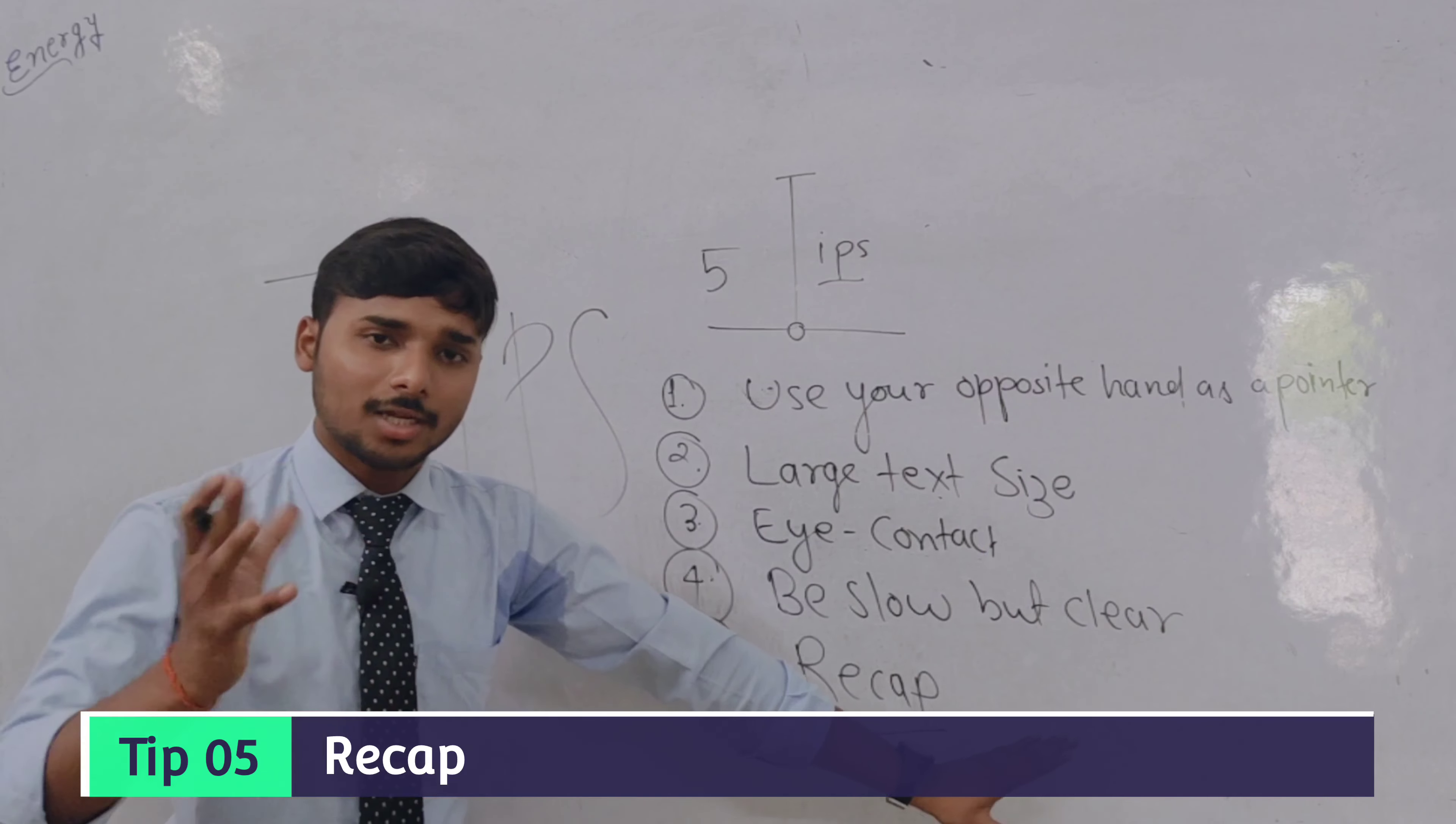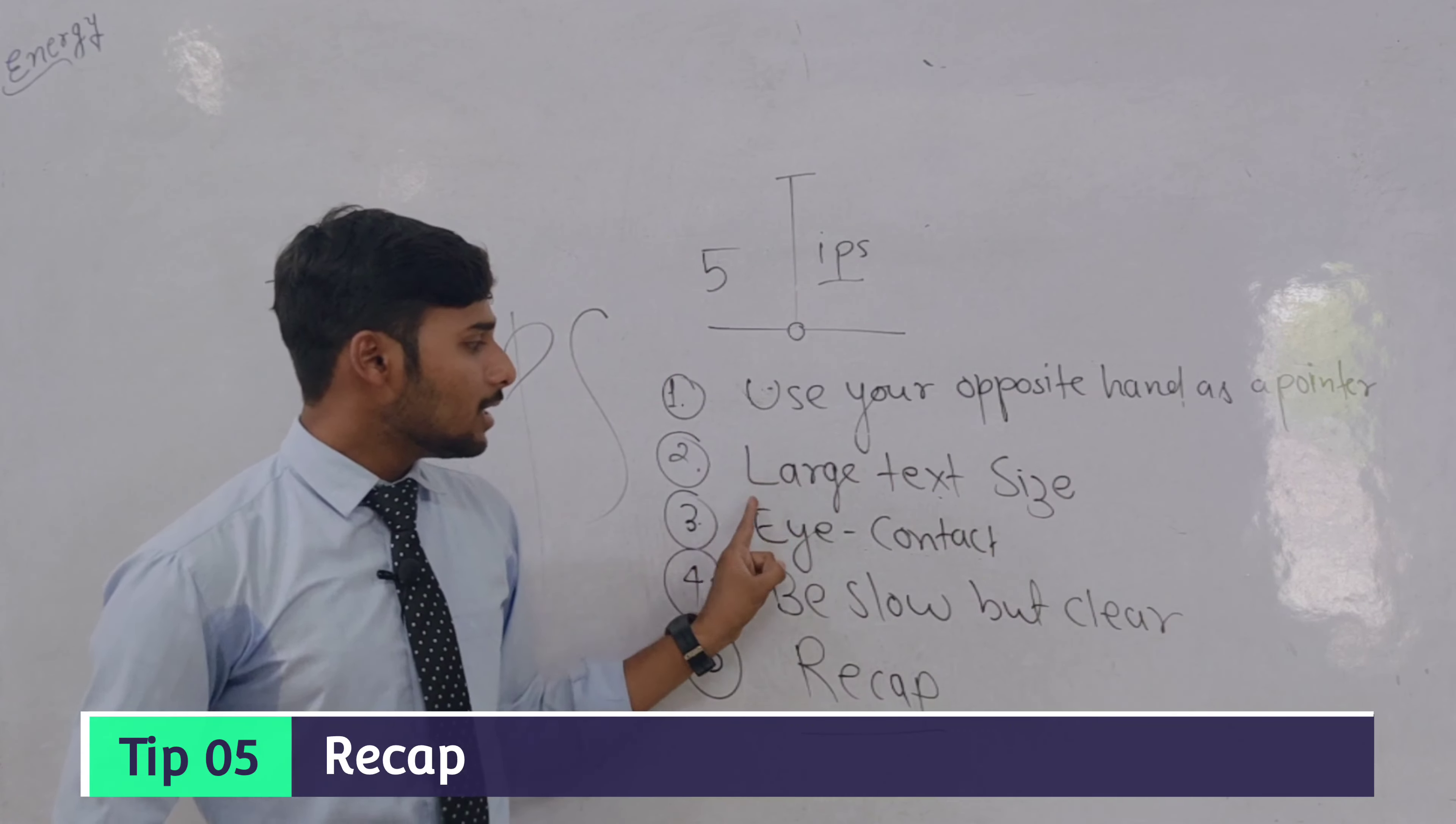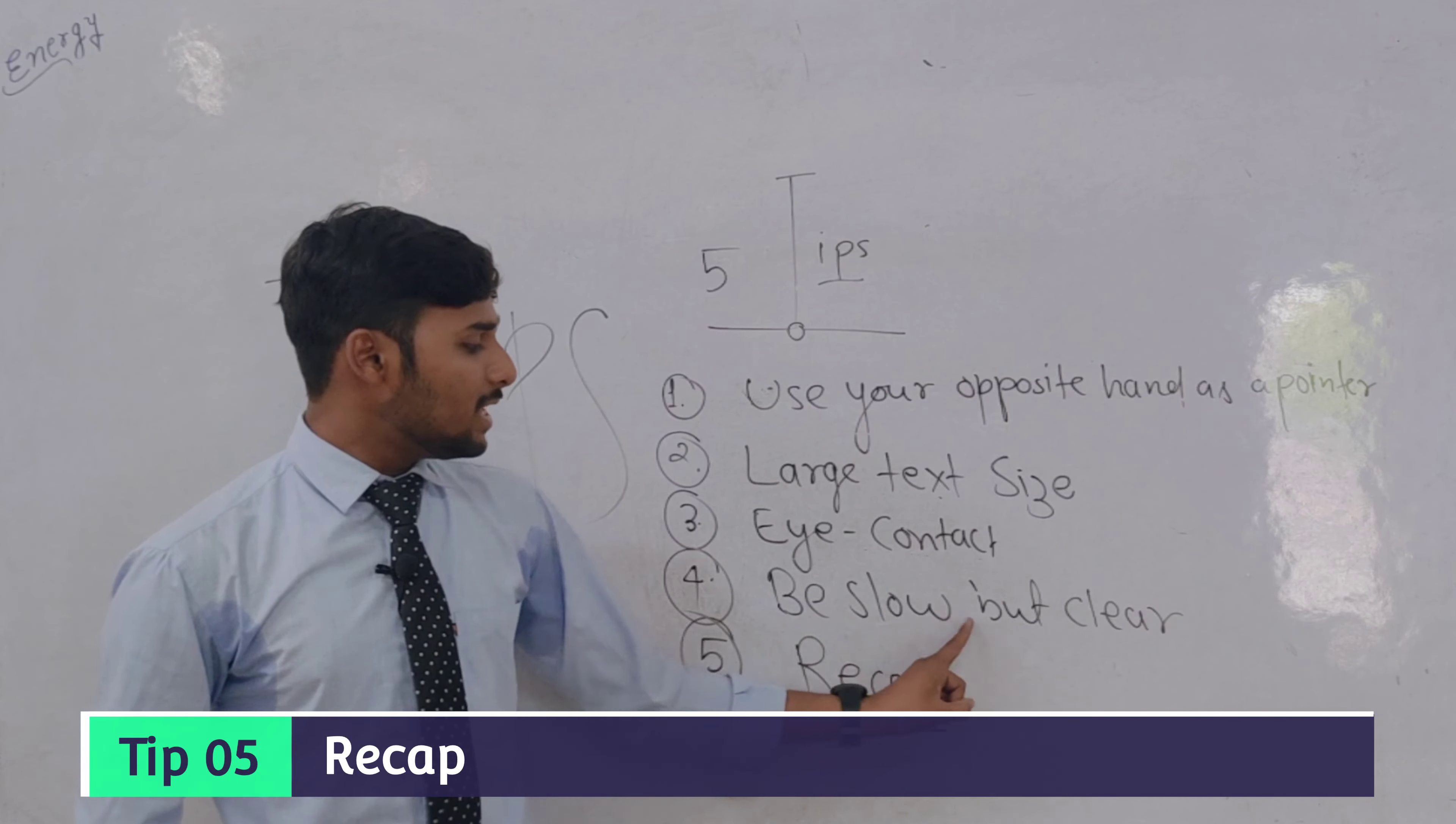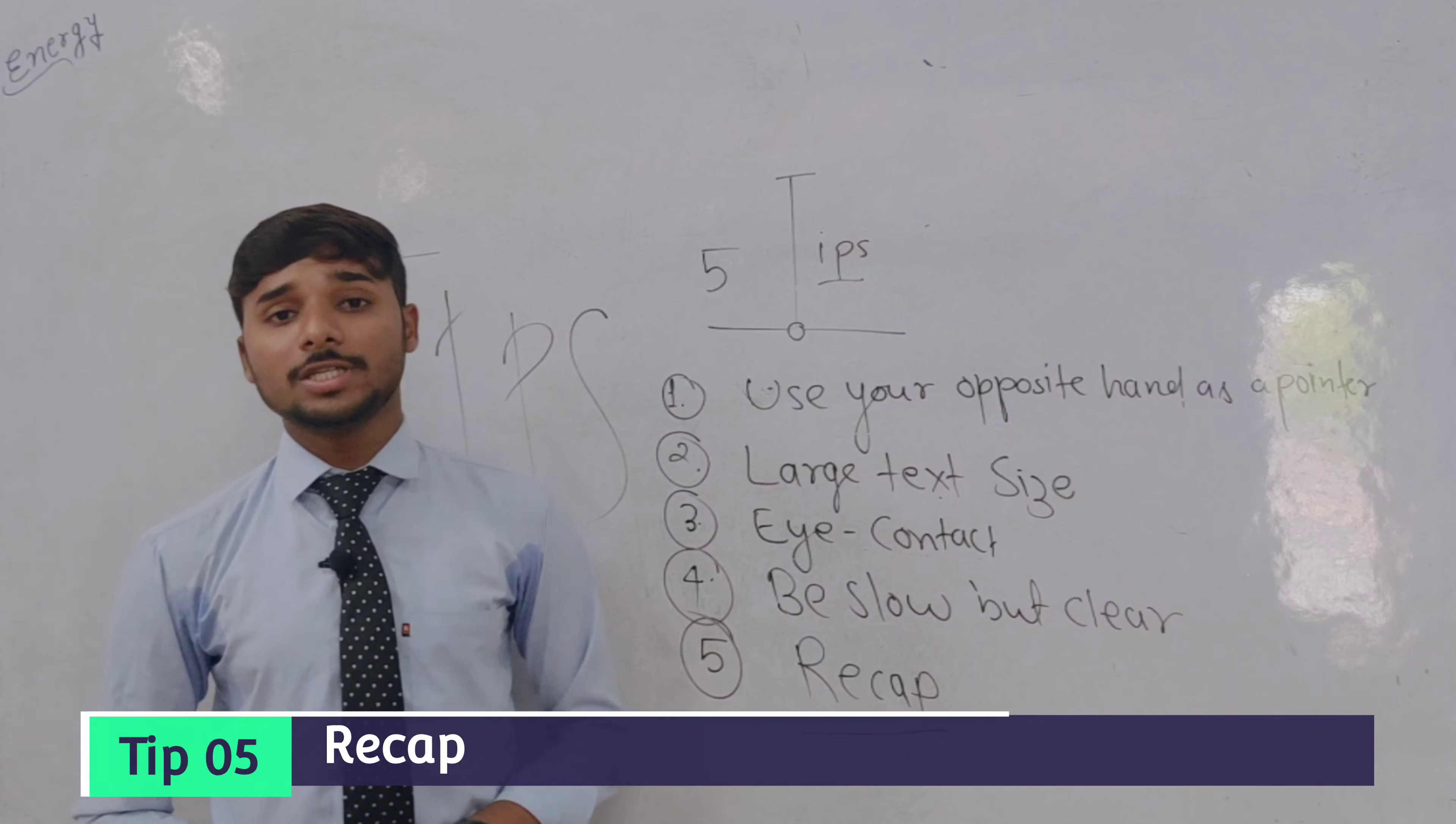Let's recap this slide. Use your opposite hand as a pointer. Number two: large text size - use always large text size in your presentation. Number three: eye contact - there should be a great eye contact in presentation. Number four: be slow but clear, don't speak very fast. And the fifth: recapping. So recap every time. I hope you understood these five tips.